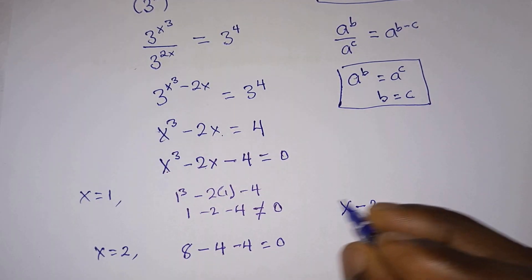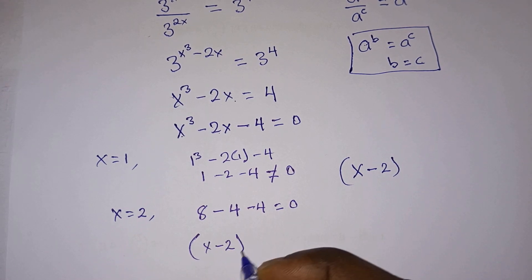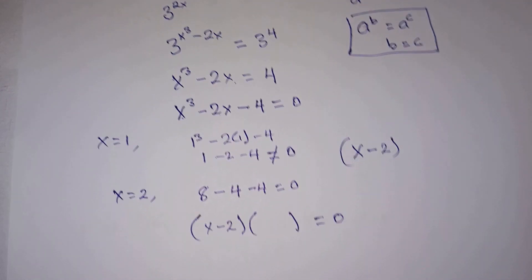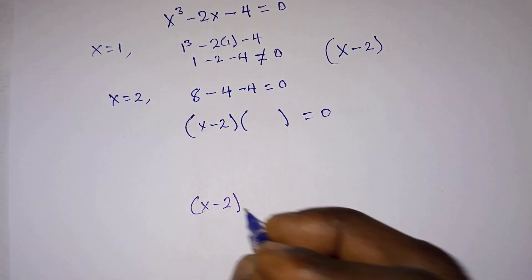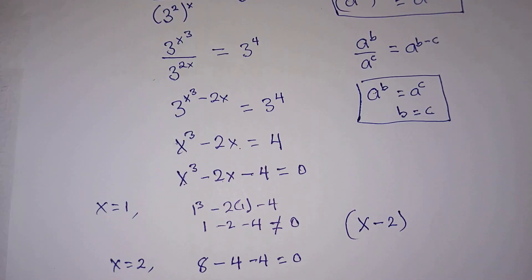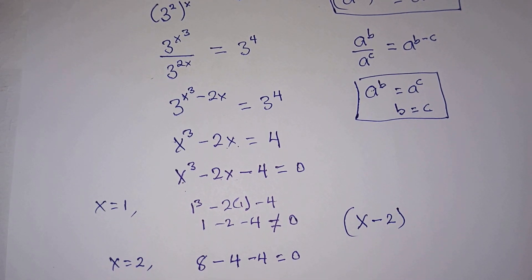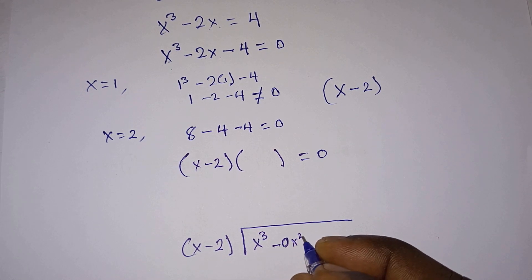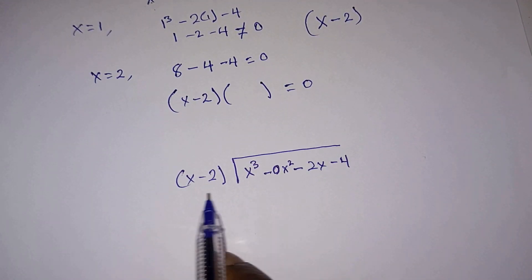Since x equals 2 gives zero, it means x minus 2 is a factor of this cubic equation. Therefore we have x minus 2 times some other factor equal to zero. We need to find that factor, so we divide the cubic equation x cubed minus 2x minus 4 by x minus 2. Note there is no x squared term, so we write it as x cubed minus 0x squared minus 2x minus 4.